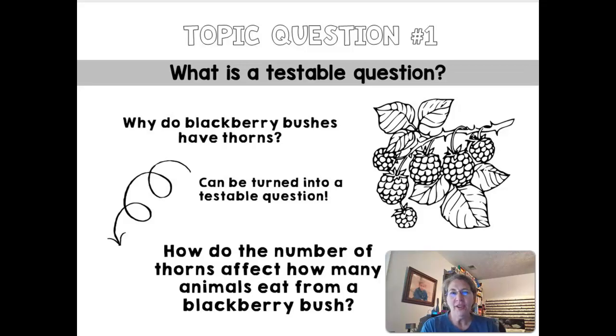So the example they give you here on this slide is changing that question to say, how does the number of thorns affect how many animals eat from a blackberry bush? So there we're counting the number of thorns and then based on the number of thorns, does that affect the animals? And so the independent or manipulated variable would be number of thorns. And the responding variable or dependent variable would be the blackberry and animals eating the blackberry bush. I changed it to say, how are the number of thorns a blackberry bush have affect how humans, how many humans harvest blackberries? So again, you have to be able to test something.